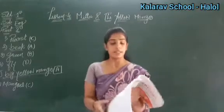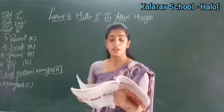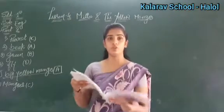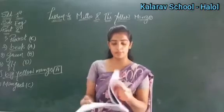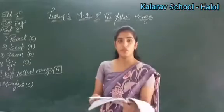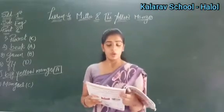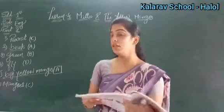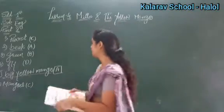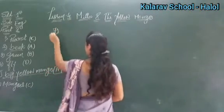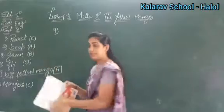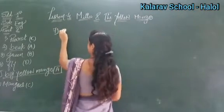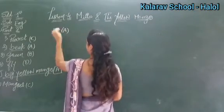Next is page 67. Question 6: What did the crow say to Mitu? The crow said go away, this is my tree. So the answer is option A.